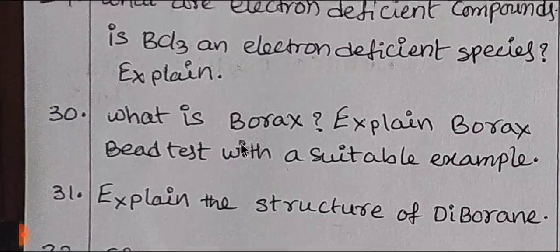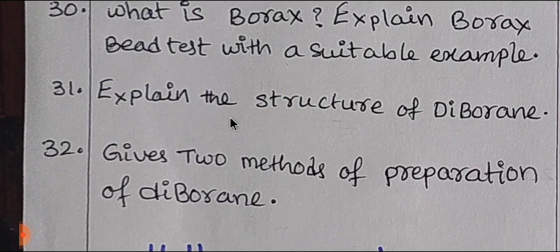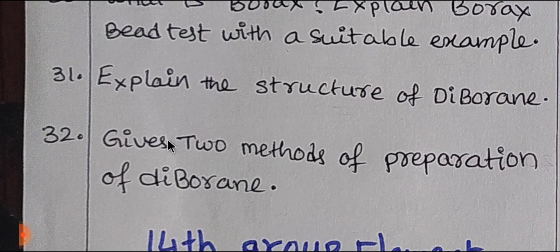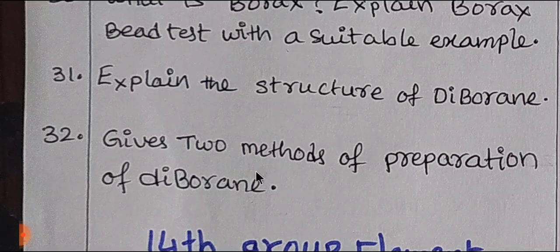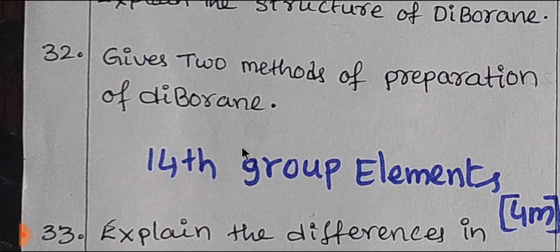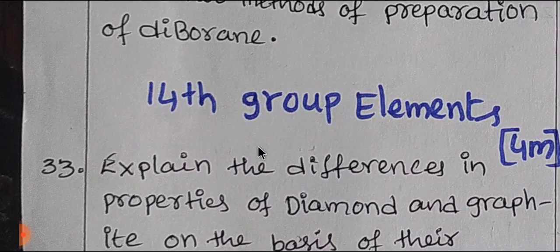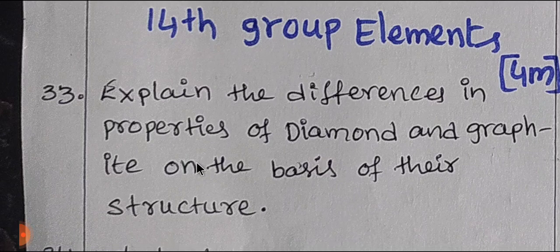The Borax bead test is covered in the 29th question. The second method covers Diborane. The best method to prepare Diborane is covered here. The most important method is done in the 14th group elements section. The most useful topics in 14th group include the difference between graphite and diamond.